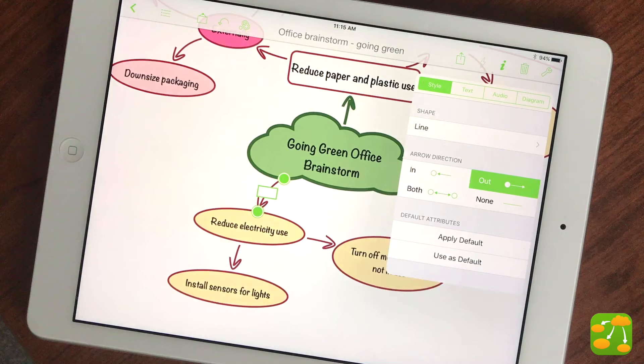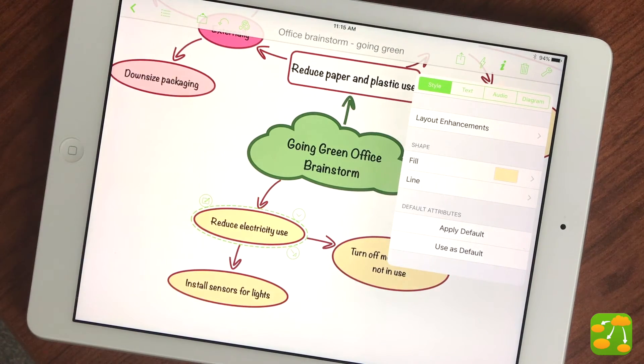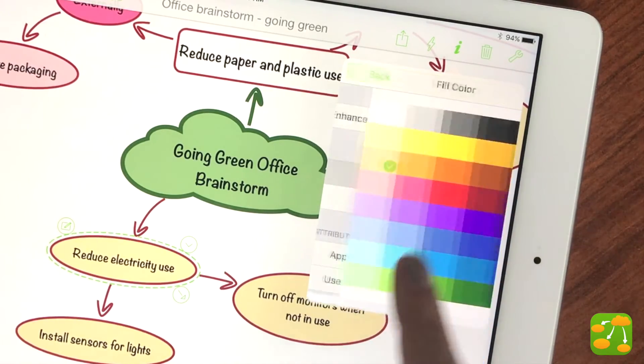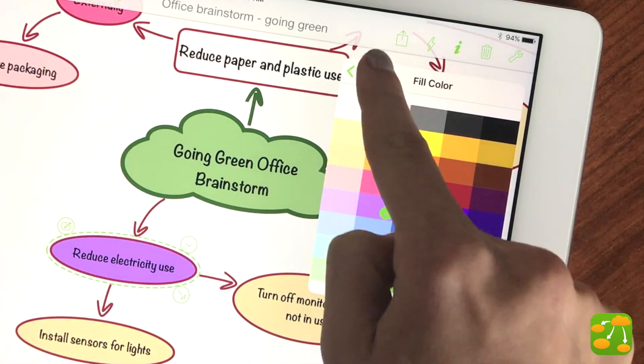In most cases, the inspector displays customization options based on what you have selected at that time. Now with an idea symbol selected, I can use the inspector to customize the color or font or make other formatting changes to my idea symbol.